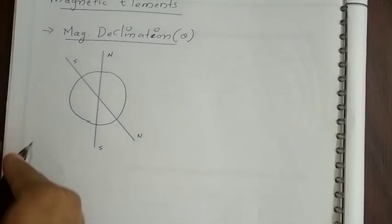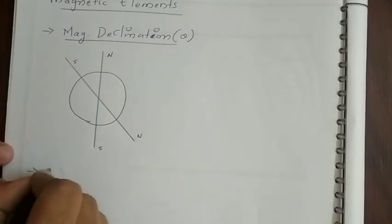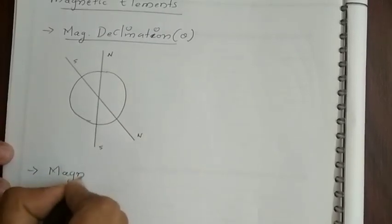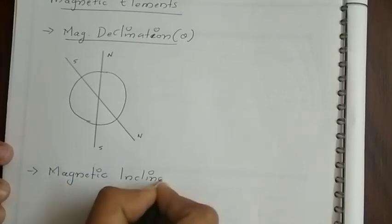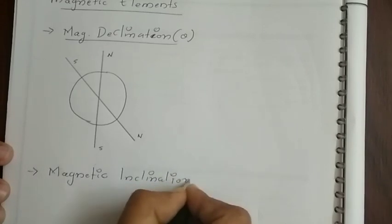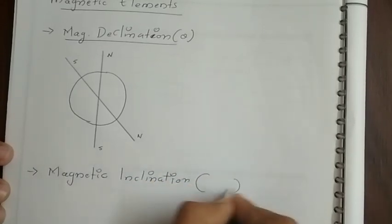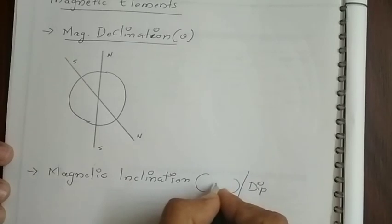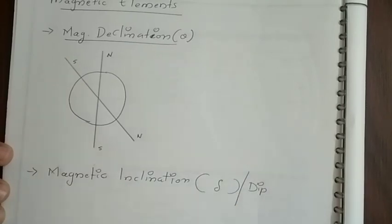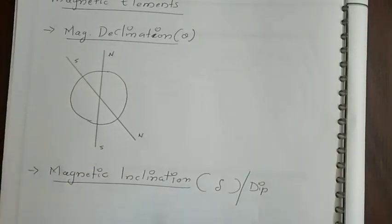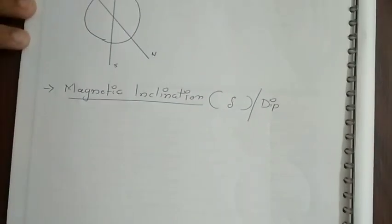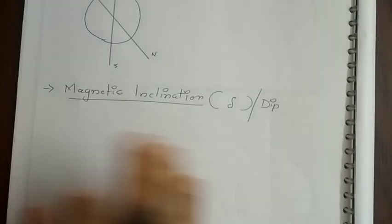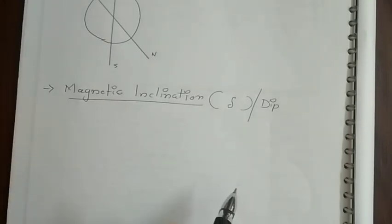The next important term is known as magnetic inclination, or dip, which is represented by delta (δ). Magnetic inclination is a particular angle which gives us the direction of the earth's magnetic field.